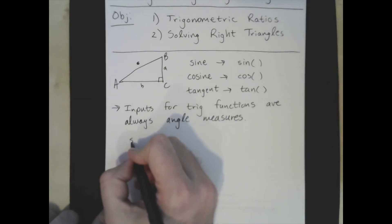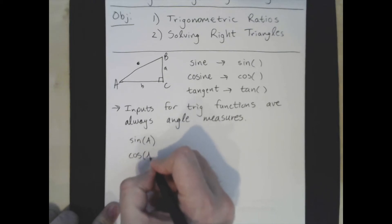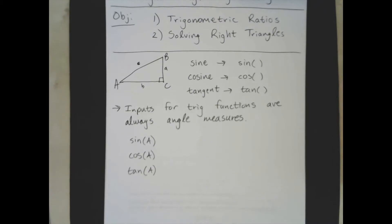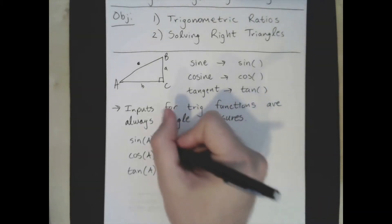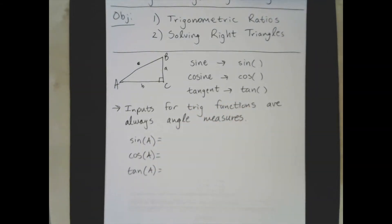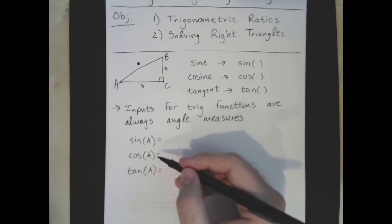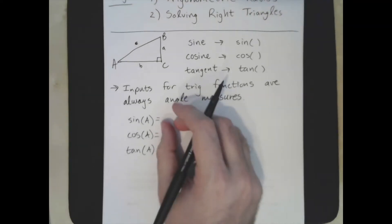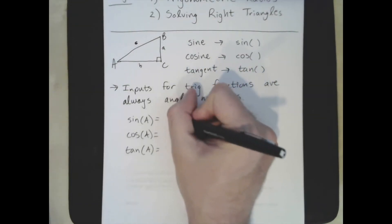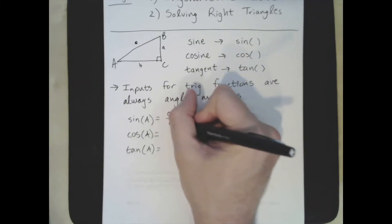So we write sine of A, cosine of A, tangent of A. We're going to build all of them, but we're going to start by focusing on angle A. Sine, cosine, and tangent have a mnemonic device to help you remember how they work. Sine is always the opposite side over the hypotenuse.